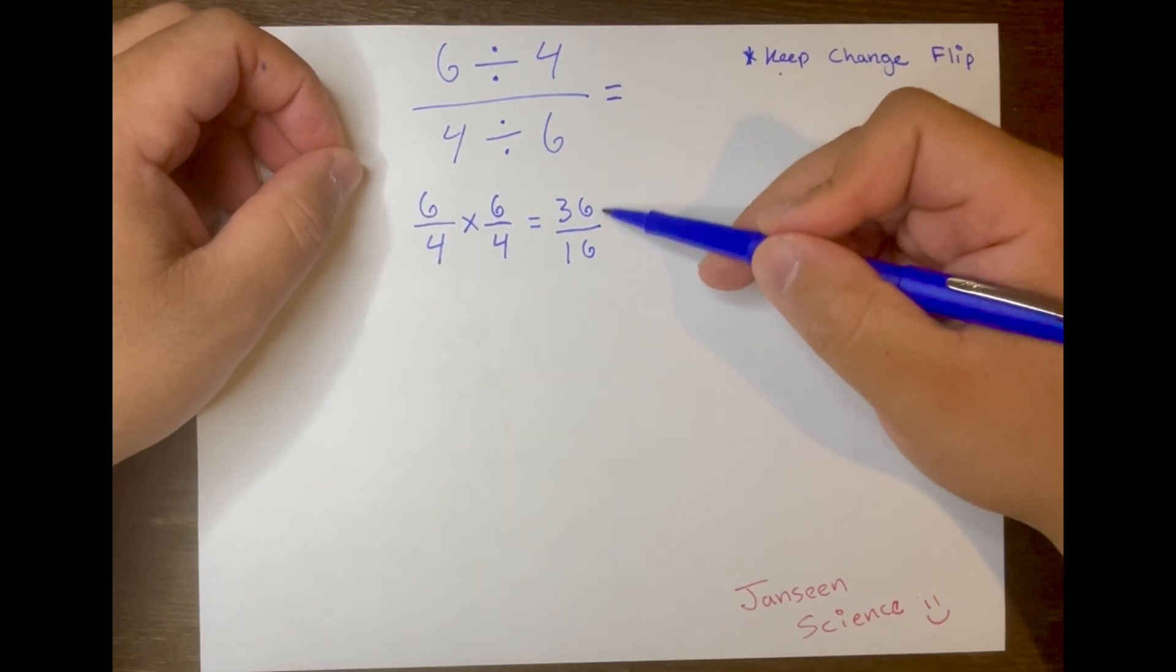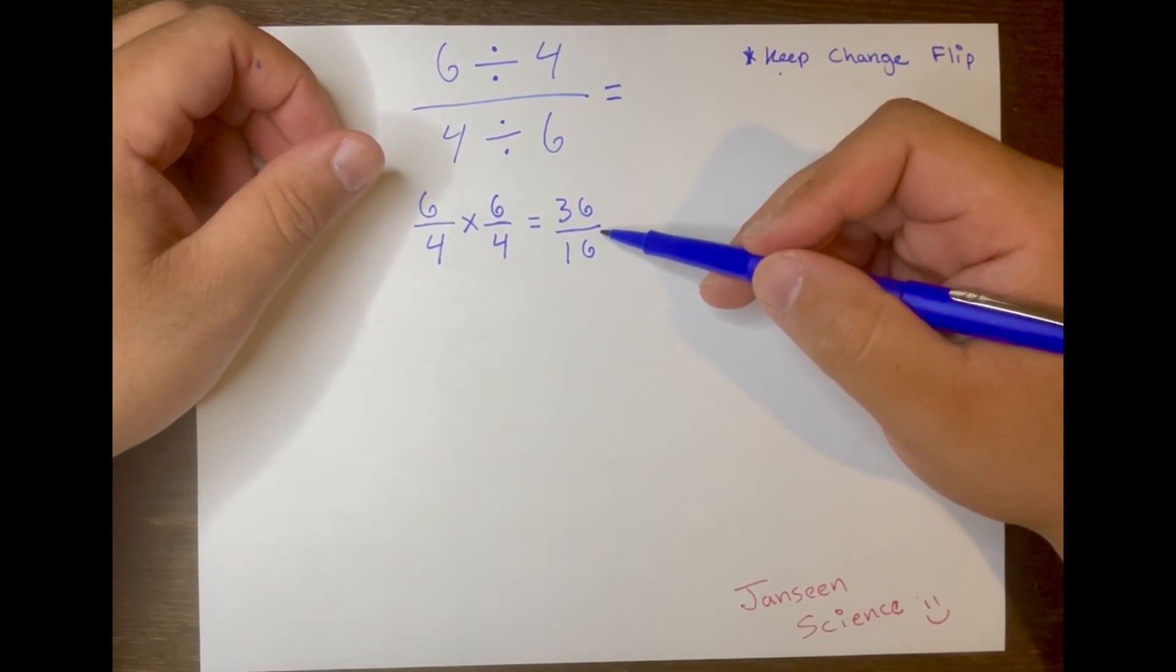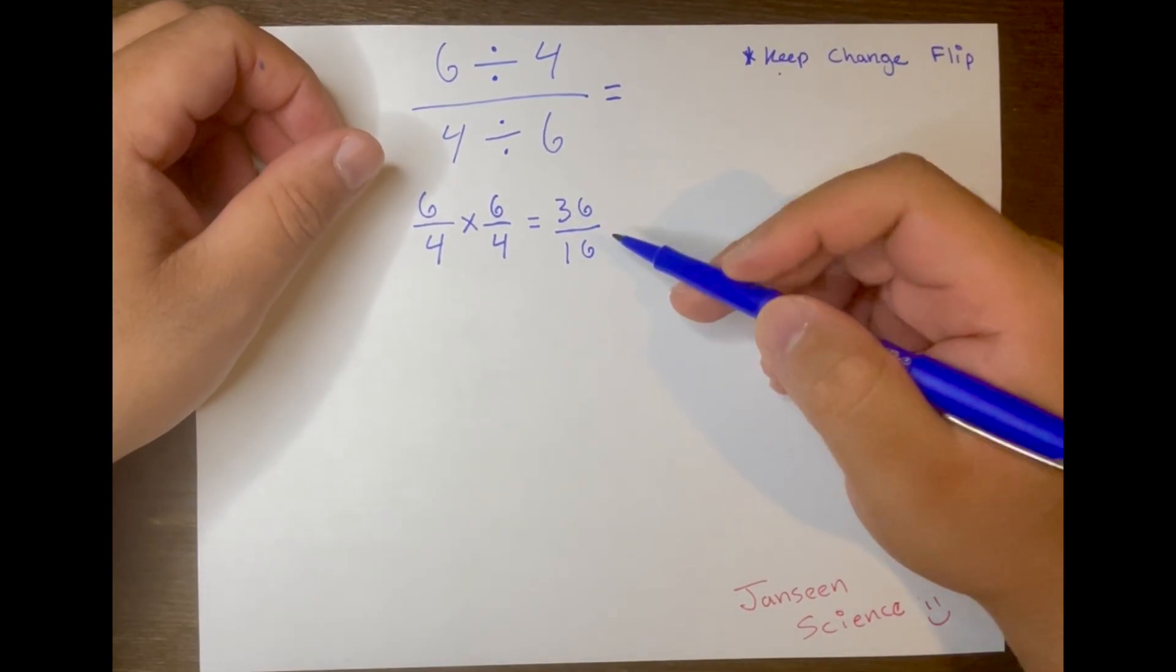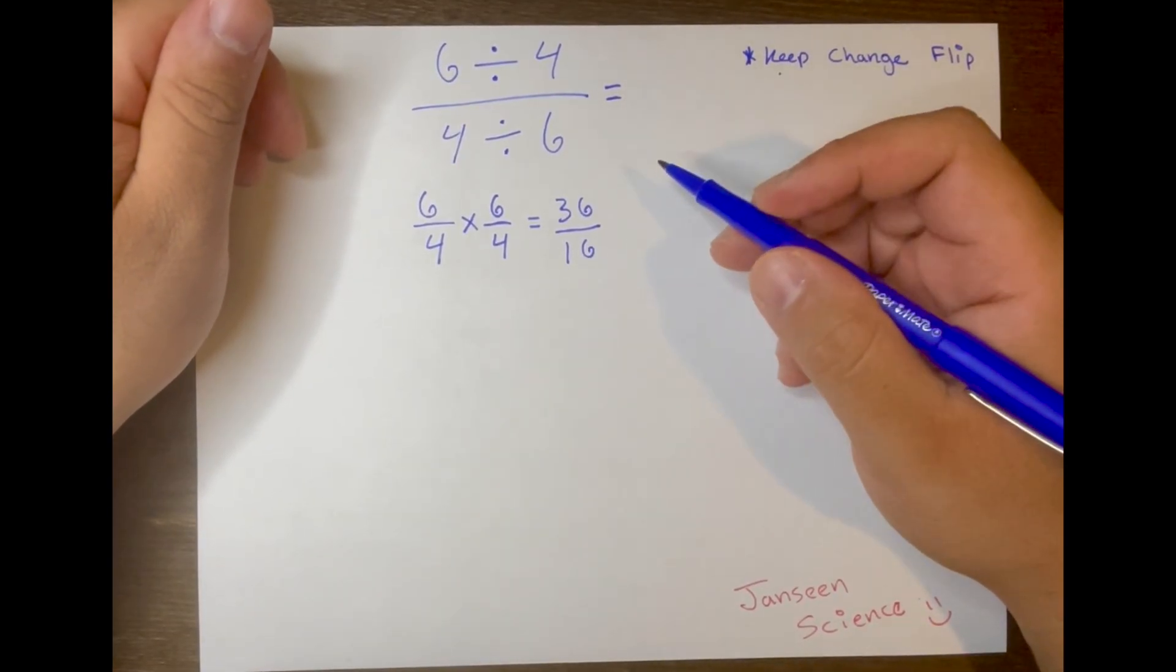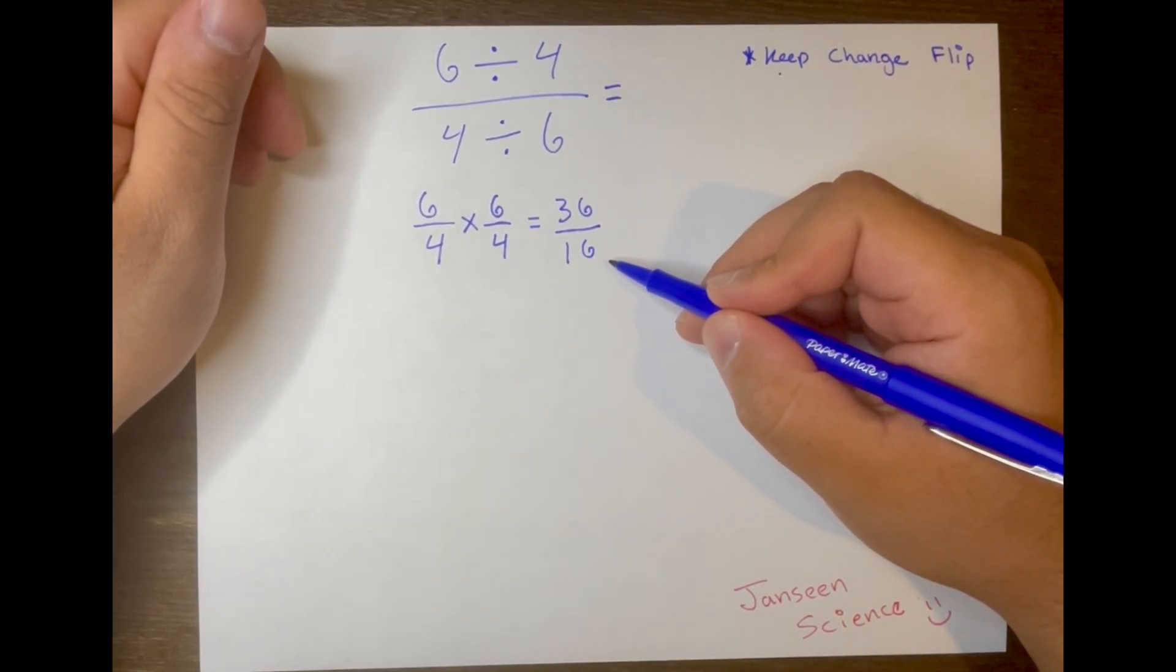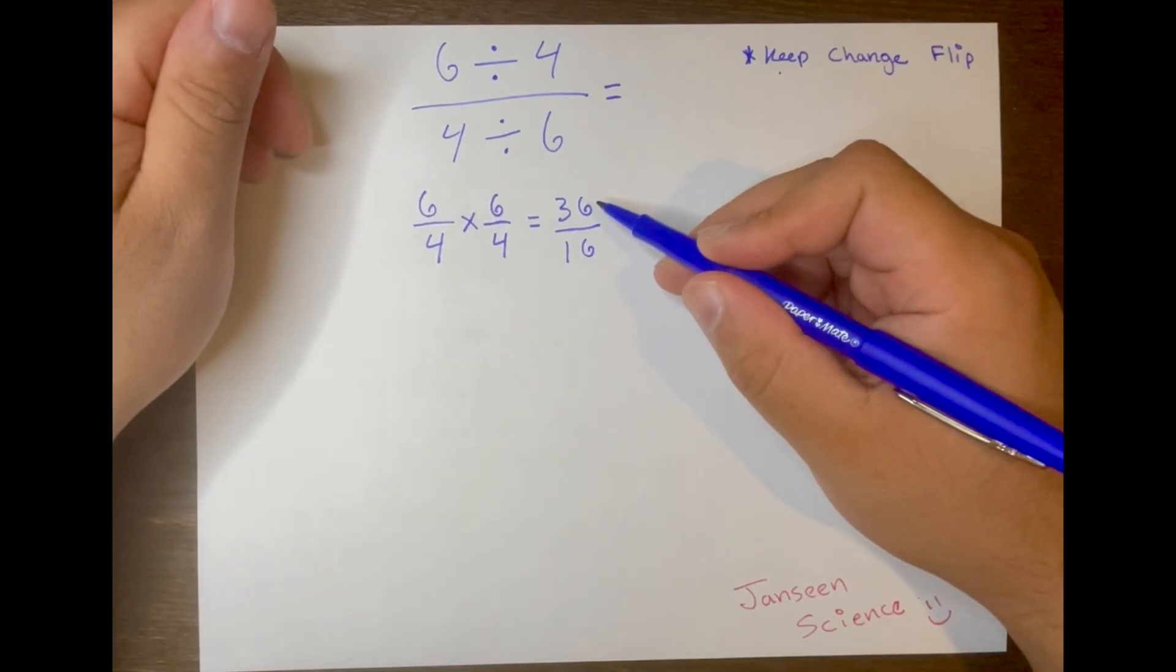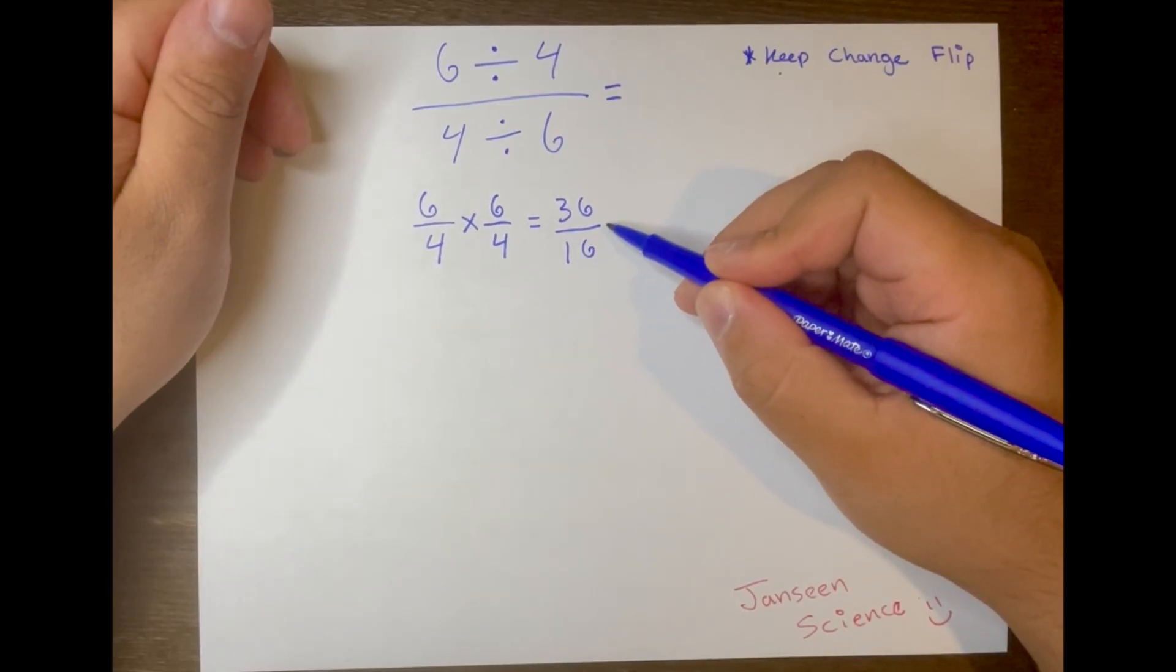Notice both numbers are even. Just by looking at them, you can count by 2s to reach both 16 and 36. By skip counting, we can verify both are divisible by 2. So we know we can divide both numbers, the top and the bottom, by 2.